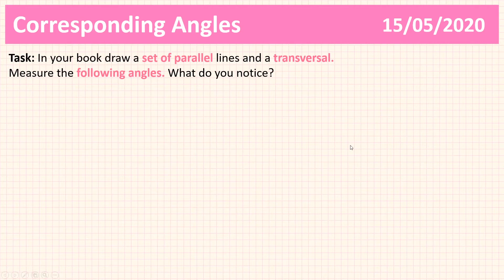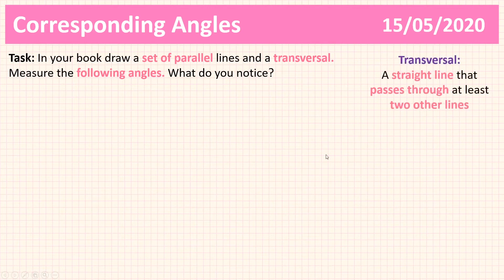So here's your first task. Your first task is to draw a set of parallel lines and a transversal. Just a reminder, a transversal is a straight line that passes through at least two other lines. Then measure the angles that I'm going to show you and tell me what you noticed.